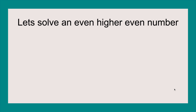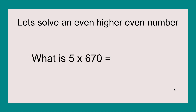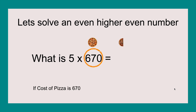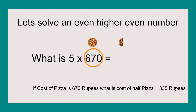Let's solve an even higher even number. What is five times six hundred and seventy? We circle the six hundred seventy, put the full pizza above it, then do the half pizza. And if we really need it we write out a sentence: if cost of pizza is six hundred seventy rupees, what is cost of half pizza? Three hundred and thirty-five rupees. So we take the three hundred and thirty-five and add a zero next to it as a suffix, giving us three thousand three hundred and fifty.